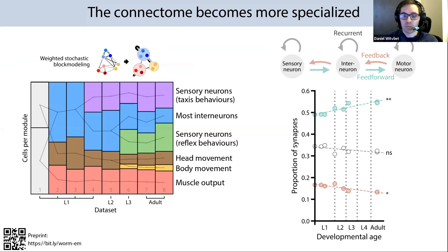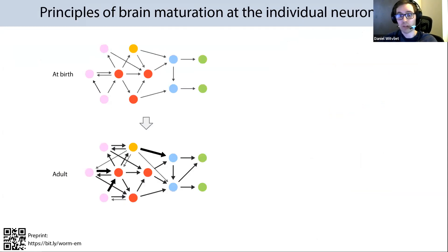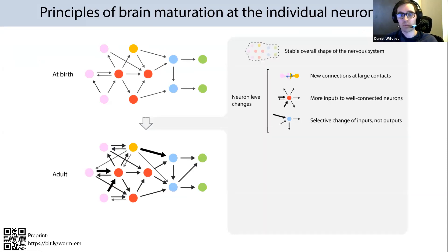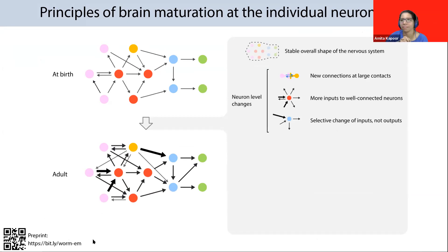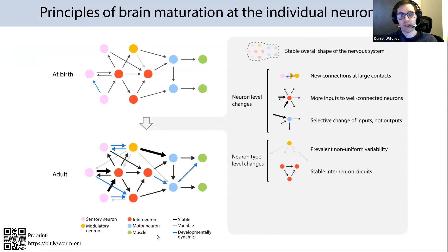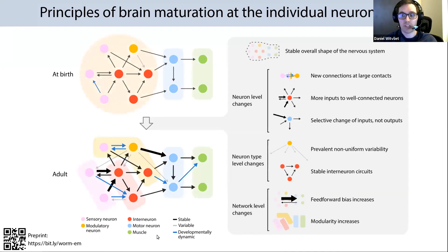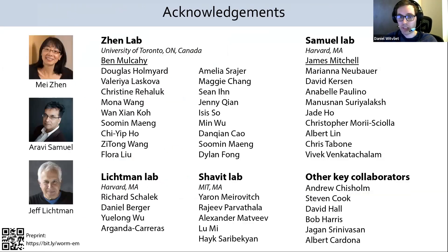Both measurements indicate that brain-wide computation becomes more specialized across maturation, possibly as an adaptation to the animal's environment. To sum up, we've uncovered principles of synaptic remodeling at multiple levels of the connectome: at the level of individual neurons, we observed patterns that alter the number and strength of individual synapses; at the second level, synaptic remodeling differed between cell types; and at the third level, network changes altered the directionality of information flow and segregation of information processing throughout the brain. I'd like to thank everyone involved, especially my lab in Toronto, the Samuel Lichmitt lab at Harvard, and the Shavit lab at MIT.